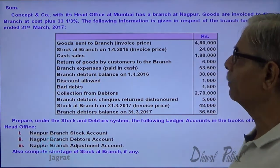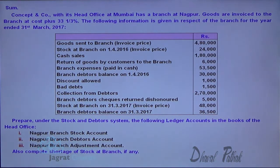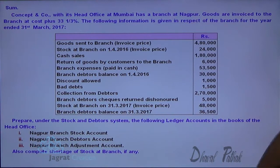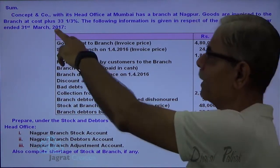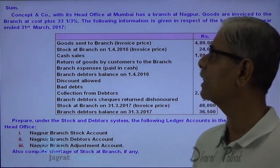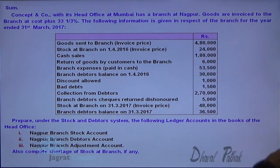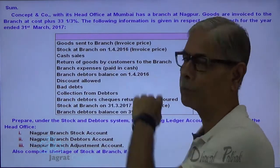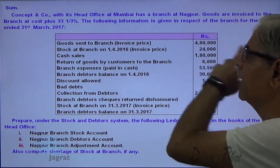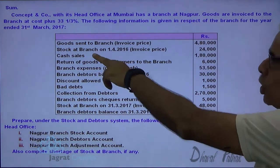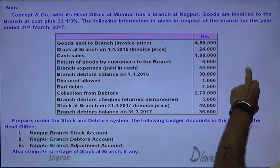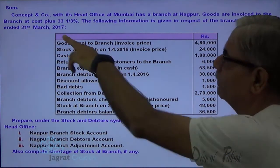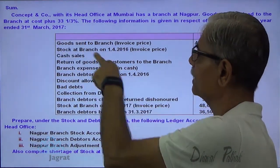Concept and Company with its head office at Mumbai has a branch at Nagpur. Goods are invoiced to the branch at cost plus 33 and one-third percent. The following information is given in respect of the branch for the year ended 31st March 2017.